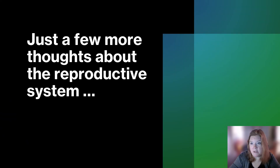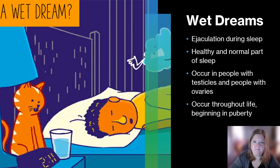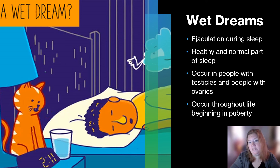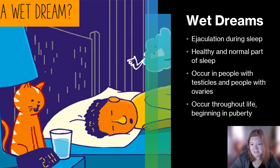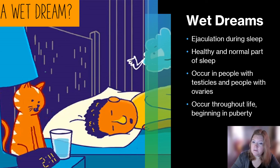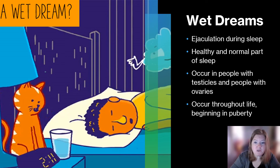A few more thoughts about the reproductive system. Wet dreams: a wet dream is when a person with a penis ejaculates during sleep. It's healthy and normal. It occurs during REM sleep, in people with testicles but also in people with ovaries. It occurs throughout life, beginning in puberty.